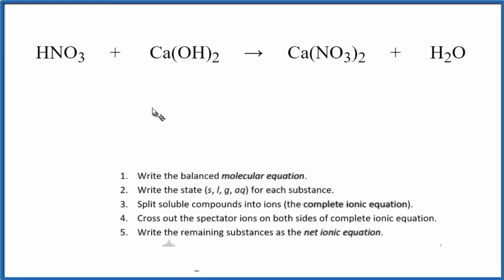In this video, we'll write the balanced net ionic equation for HNO3 plus Ca(OH)2. That's nitric acid plus calcium hydroxide. The first thing we need to do is balance the molecular equation. To balance that, we'll put a 2 in front of the HNO3 and in front of the H2O.